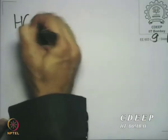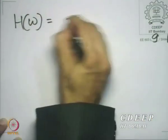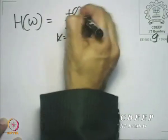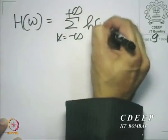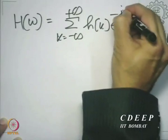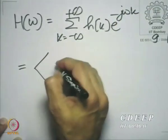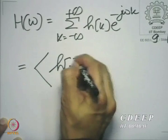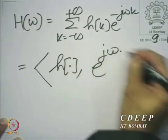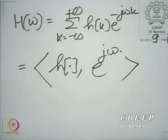Now, let us interpret the so-called frequency response that we wrote last time in the language of the dot product. We have h(ω) = summation k going from minus to plus infinity of h(k) e raised to the power minus j·ω·k, and it is obvious that this is the dot product of the sequence h with the sequence e raised to the power j·ω·n.